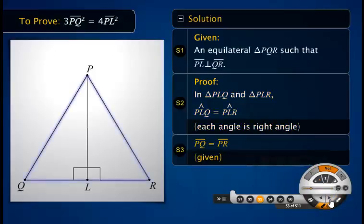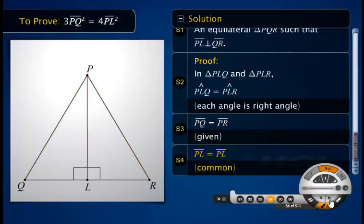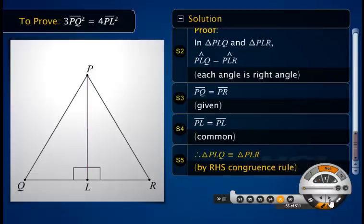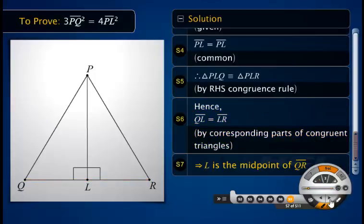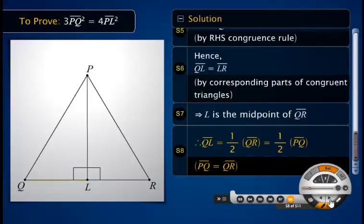In triangles PLQ and PLR, angle PLQ equals angle PLR as each is a right angle. As triangle PQR is equilateral, side PQ equals PR. Side PL is common to both triangles. Therefore, triangle PLQ is congruent to triangle PLR by RHS congruence rule. Hence by corresponding parts of congruent triangles, QL equals LR. As a result, point L is the midpoint of side QR. Therefore, the length of QL is half the length of QR, or half the length of PQ.